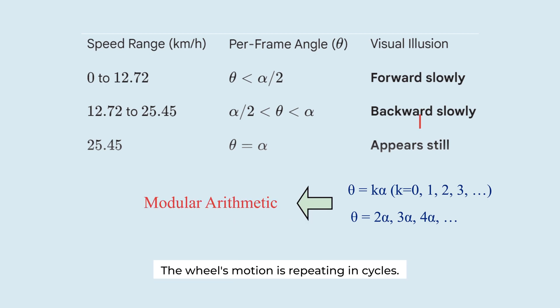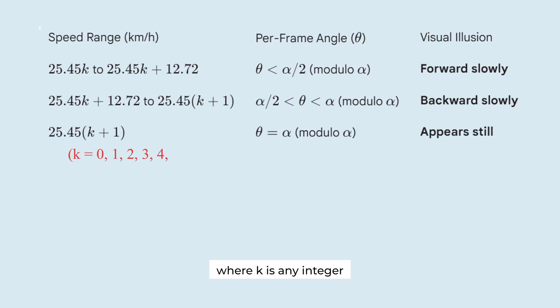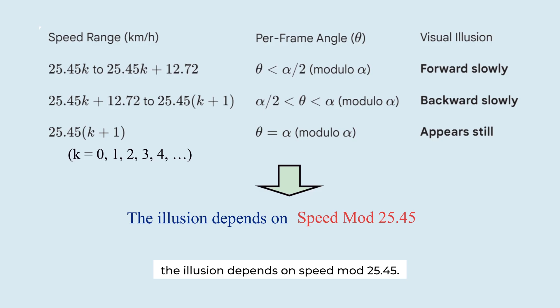The wheel's motion is repeating in cycles. Here's the full speed chart where k is an integer starting from zero. In mathematical language, the illusion depends on speed modulo 25.45.